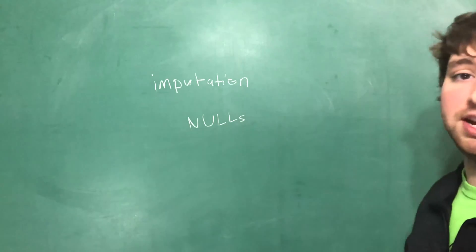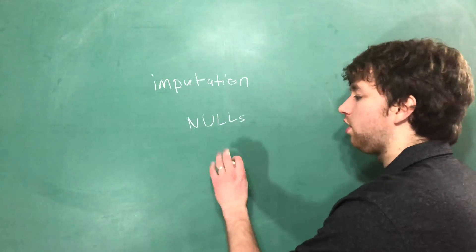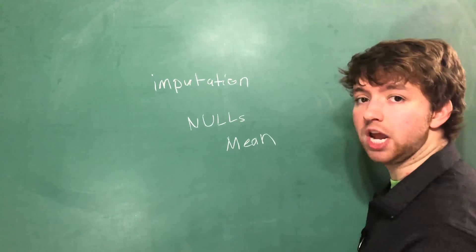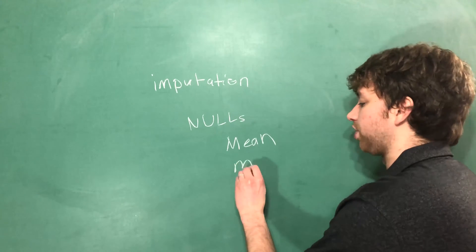That being said, it is still a little bit dangerous. For example, if we make a lot of nulls the mean, well that'll actually change some of the other central tendencies. So for example, the mode will change.